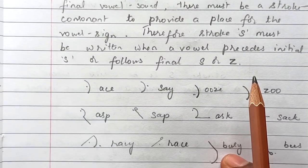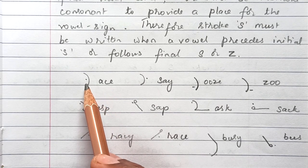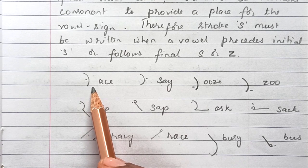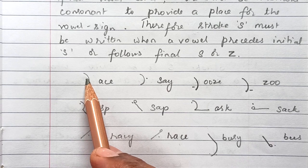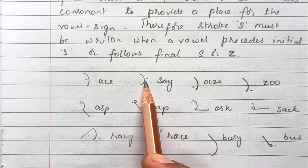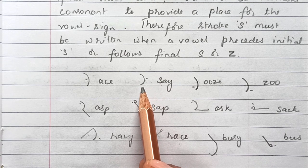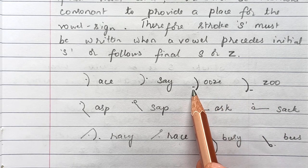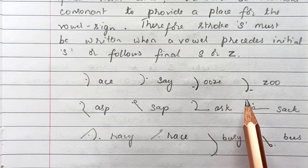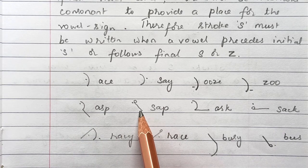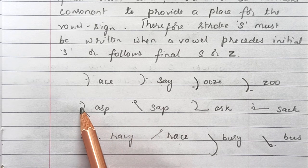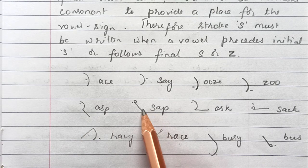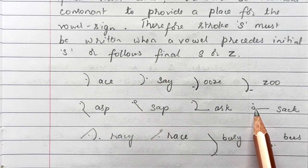Here are some words to understand this concept. In 'as,' a vowel precedes S, so we write the stroke to place the vowel. In 'ose,' the vowel follows S, so stroke S is required. In 'z,' 'o's,' and 'zoo,' the vowel is both preceding and following, so a stroke is required. In 'ask' and 'sap,' a vowel precedes S so we write the stroke; in 'sack,' the vowel comes after S so we can write circle S.